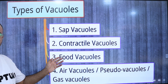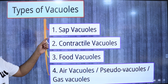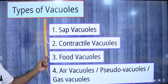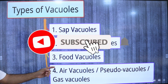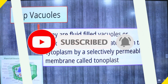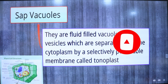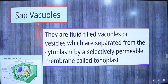There are four types of vacuoles: sap vacuoles, contractile vacuoles, food vacuoles, and air vacuoles — also known as pseudo vacuoles or gas vacuoles. Sap vacuoles are fluid-filled vacuoles present in plant cells, bounded by a single membrane called the tonoplast, with cell sap present inside the tonoplast.